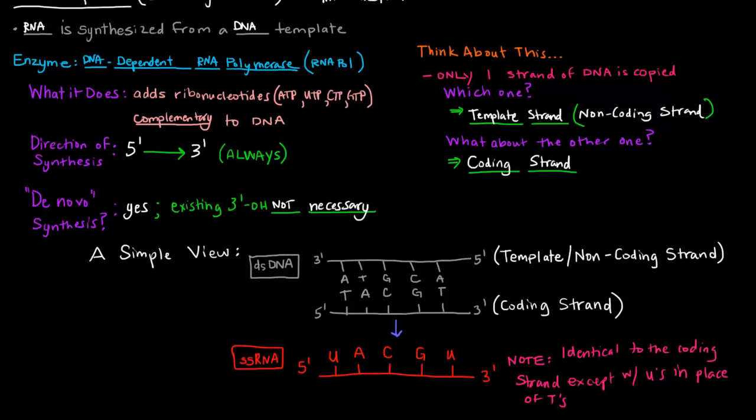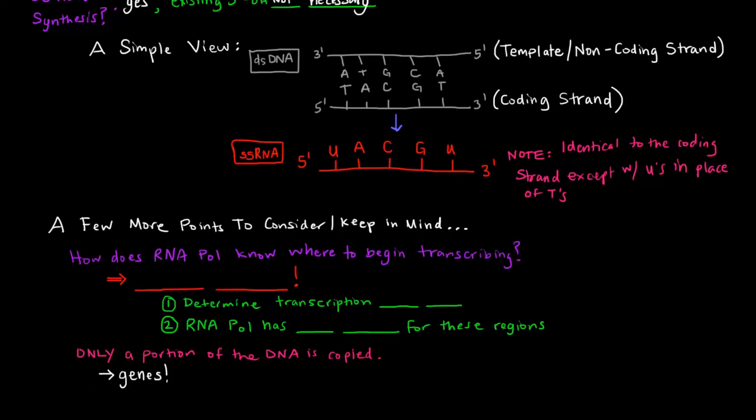A few more things to keep in mind. How does RNA polymerase know where to begin transcribing? Well there are these things called promoter sequences. Now what is the purpose of promoter sequences? They basically determine where transcription starts. They determine transcription start sites.